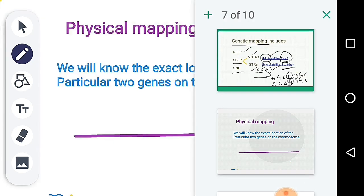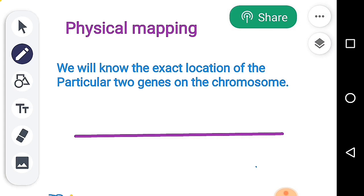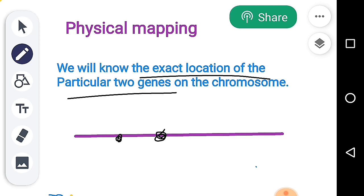Next are Physical Mapping methods. Unlike Genetic Mapping and Linkage Mapping, Physical Mapping gives us the exact location of particular genes on a chromosome. If a gene is found in a particular location on the chromosome, we can find that particular place across generations using physical mapping.